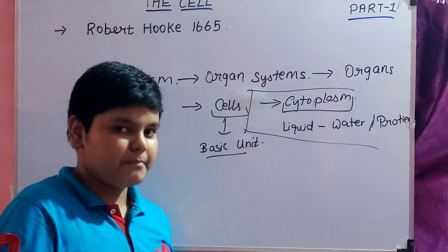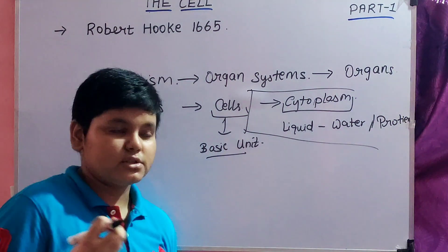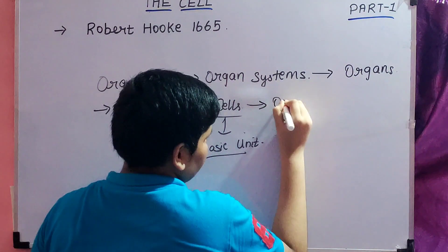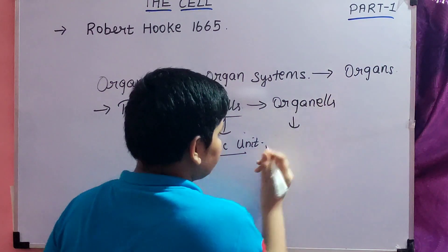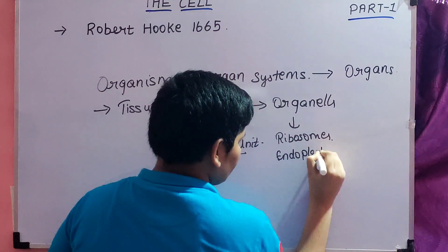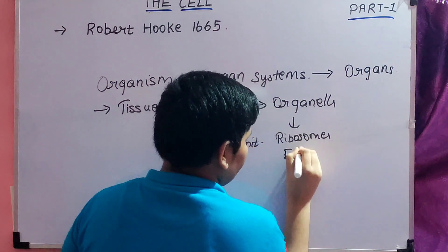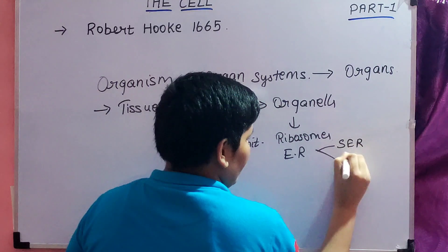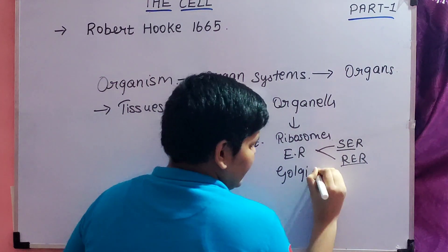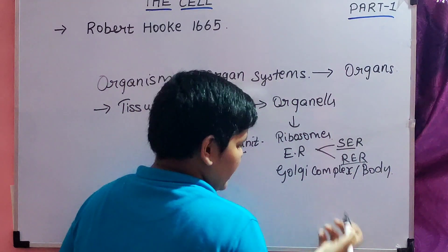Inside cytoplasm there are many different parts, also known as the parts of cells — organelles, not organs. Inside a cell there are many organelles: ribosomes, endoplasmic reticulum (or ER), which is comprised of SER (smooth endoplasmic reticulum) and RER (rough endoplasmic reticulum), then we have the Golgi complex or Golgi body, and we have the nucleus.